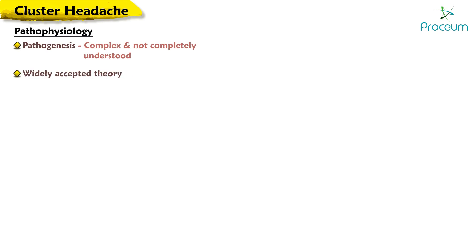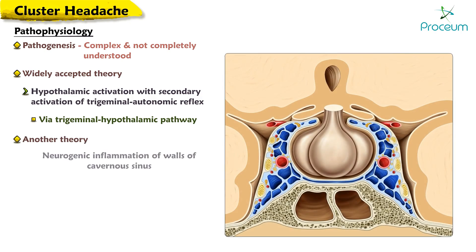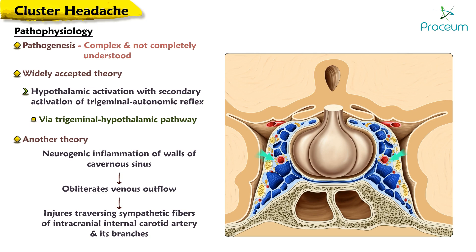The most widely accepted theory is that primary cluster headache is characterized by hypothalamic activation with secondary activation of the trigeminal autonomic reflex, probably via a trigeminal-hypothalamic pathway. Another theory holds that neurogenic inflammation of the walls of the cavernous sinus obliterates venous outflow and thus injures the traversing sympathetic fibers of the intracranial internal carotid artery.